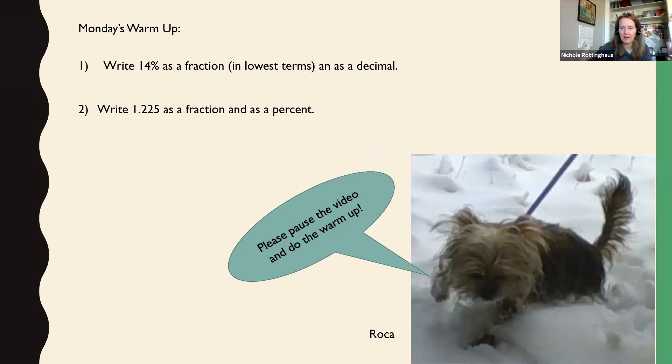Okay, so you have a warm-up. We are showcasing Clara's dog, Roka. She is a Shih Tzu Yorkie mix, and she is so cute. She looks like if there's much more snow there, she's going to get buried, though. She looks like a little tiny dog. But she says, pause the video and do the warm-up, and I agree with her. So go ahead and solve those two problems, and then come on back.